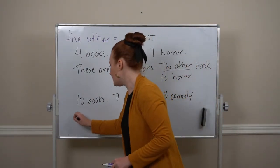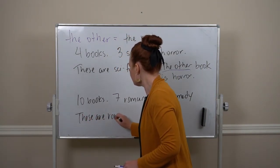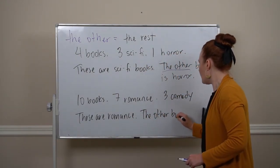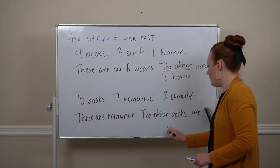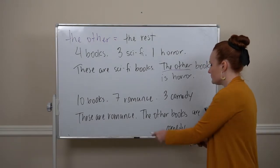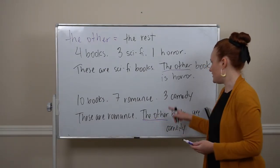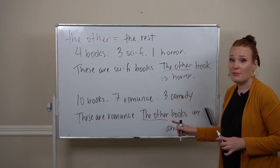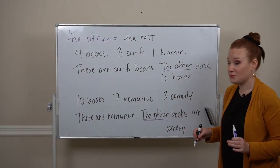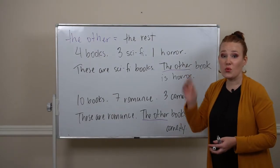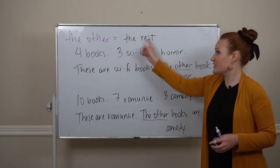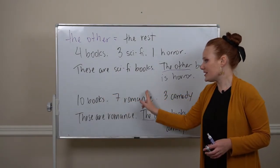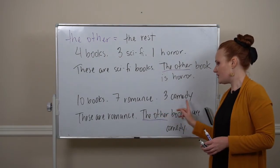So here 'the other' is being used as an adjective to describe our noun of book. But it could also be plural books. If we had ten books, seven are romance and three are comedies, then I could say, these ones over here are romance, the other books are comedy. So here it's still an adjective but this is for a plural noun. So it can be singular or plural but it is specific. When I say the other book is horror, there's only one book left, this is the rest of the books. Same here, I only have ten books total, so if I've already talked about seven, when I talk about these three, that's all the rest. I'm being specific about which books I'm referring to.